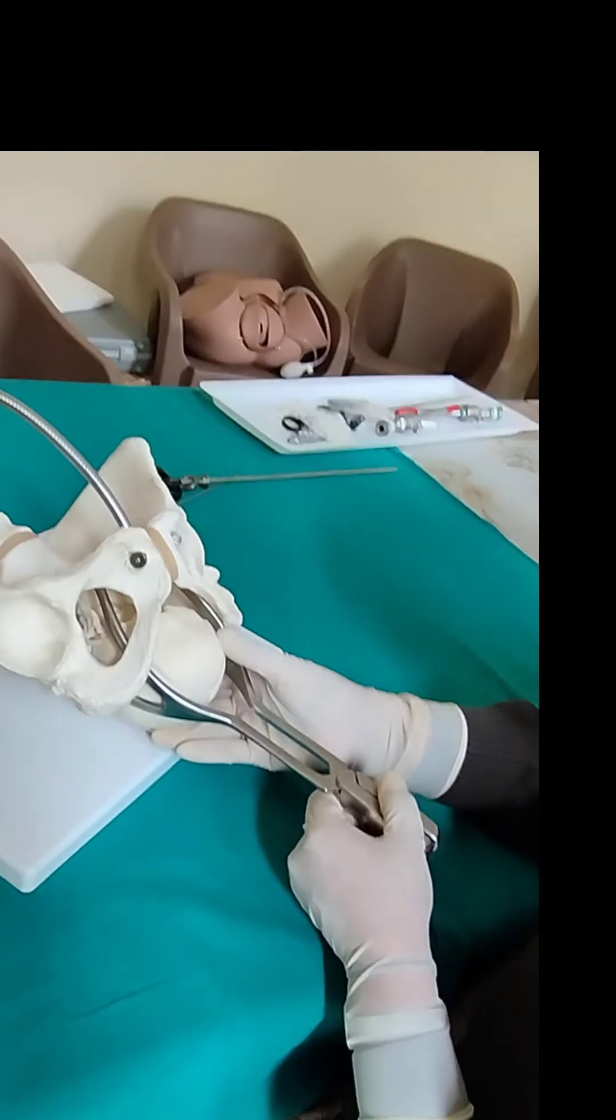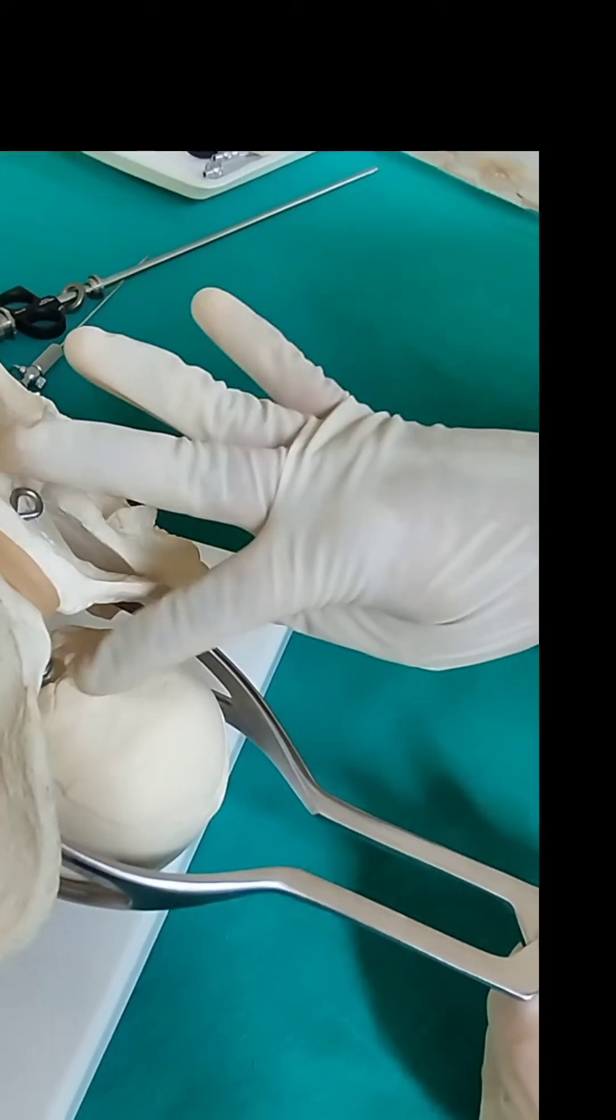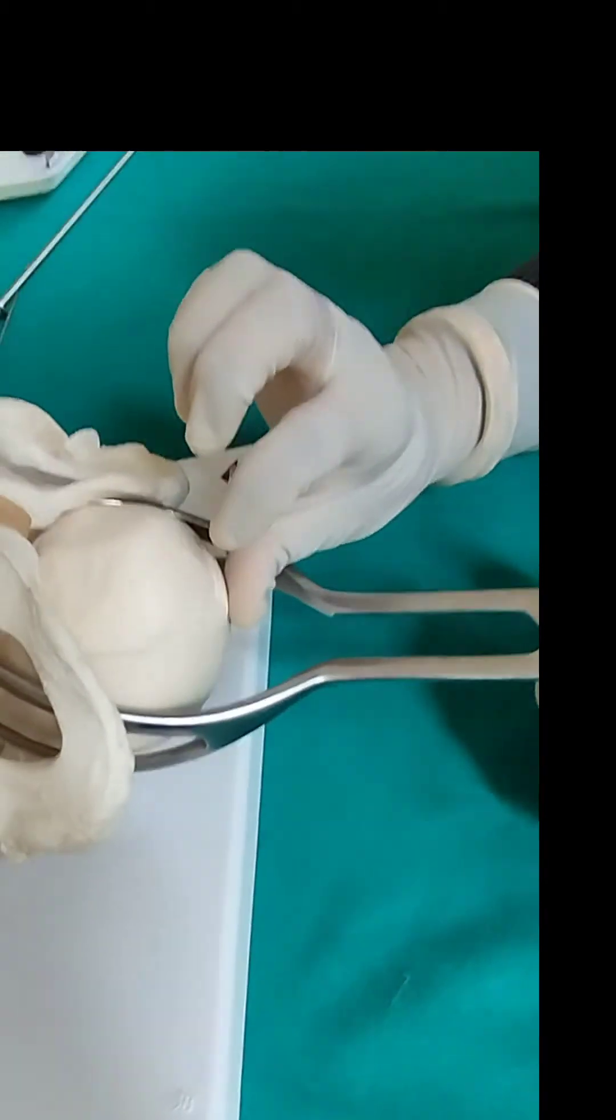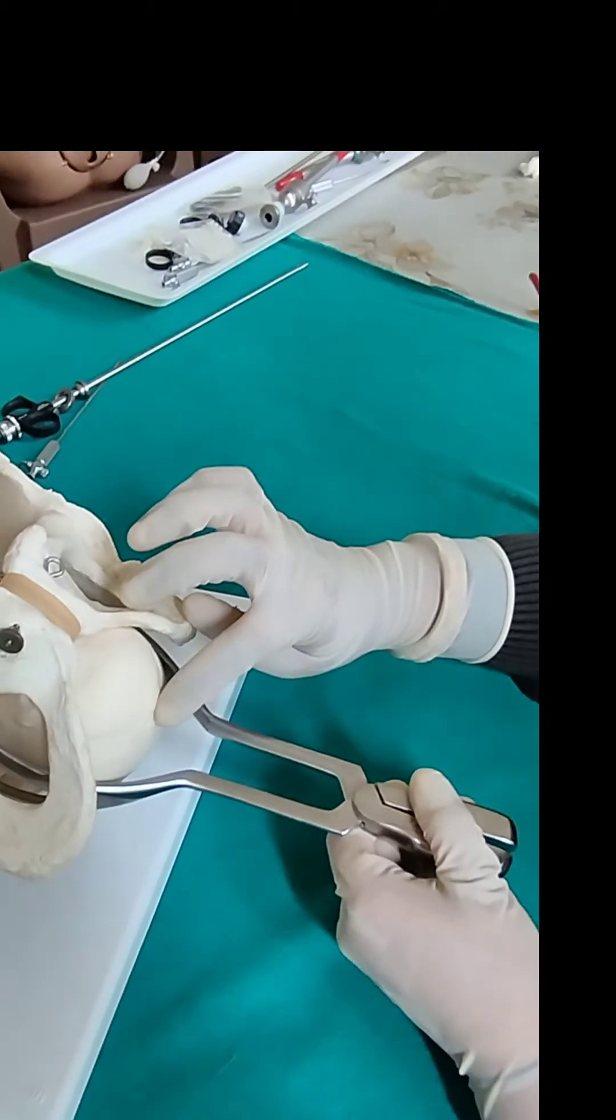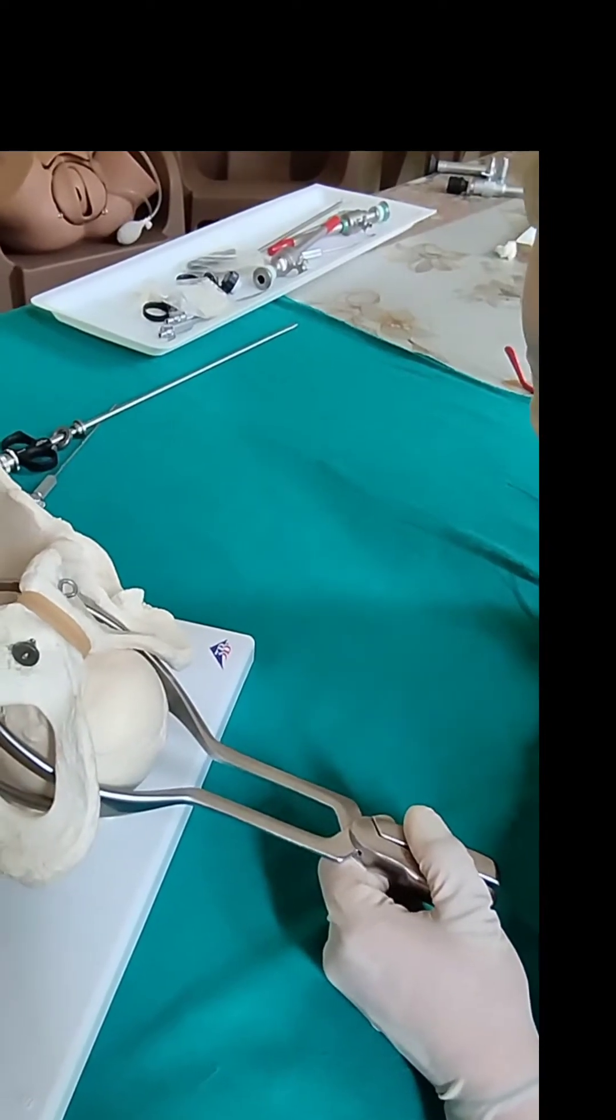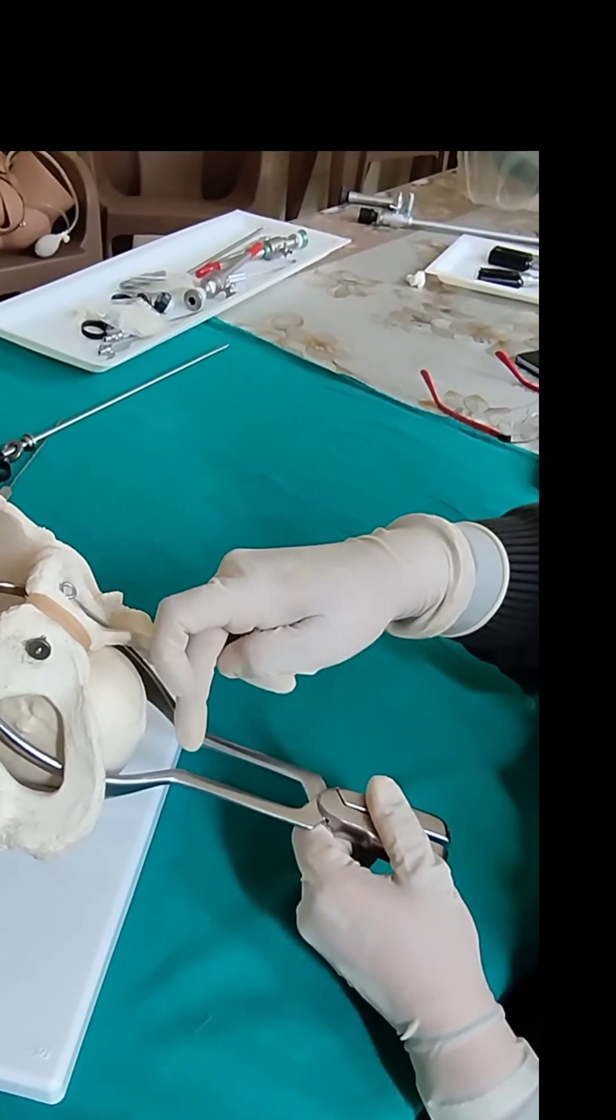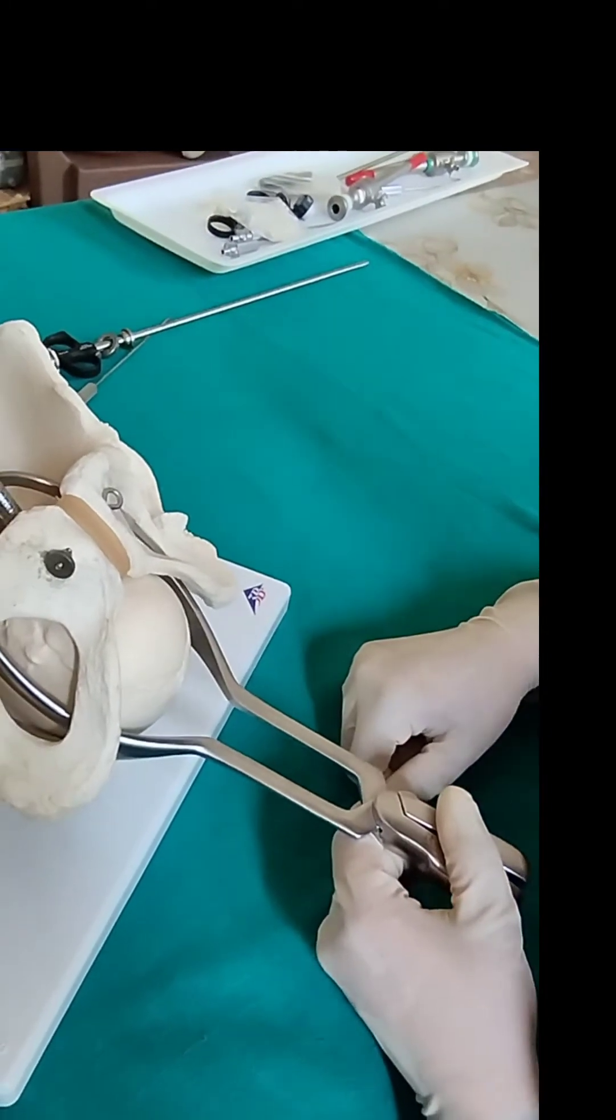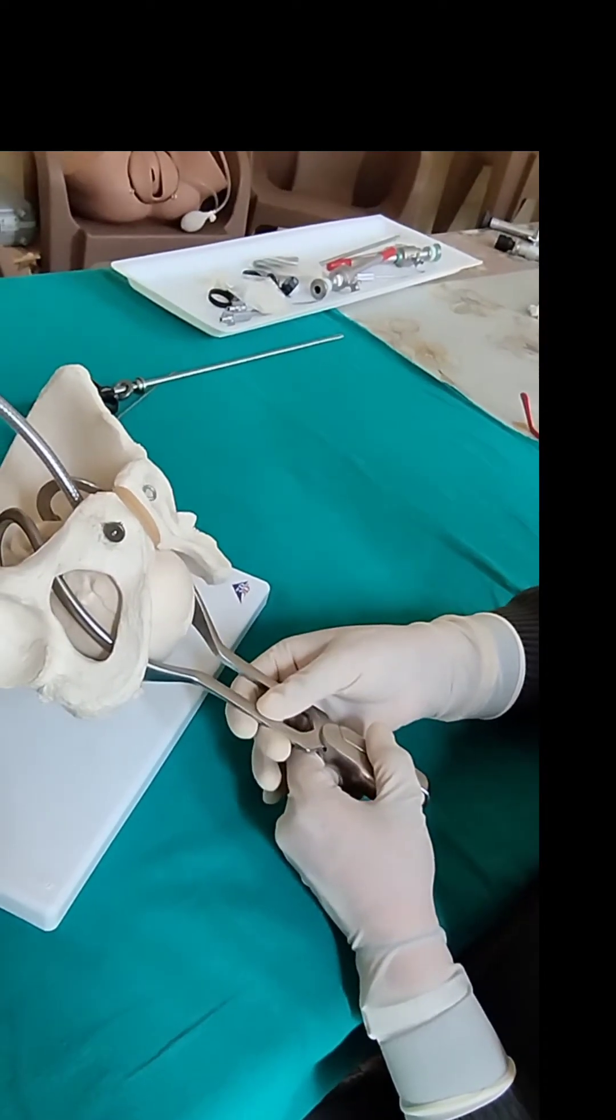After application, you have to ensure that the sagittal suture is in midline, the two blades are equidistant from the sagittal suture. The posterior fontanelle is about 1 cm above the shanks. The distance of the fetal skull from the shanks, this space should not be allowing more than 1 finger breadth. If the blades are locked easily, then the application is alright.